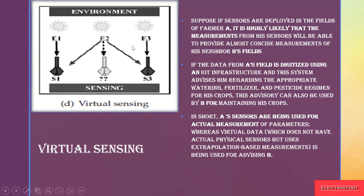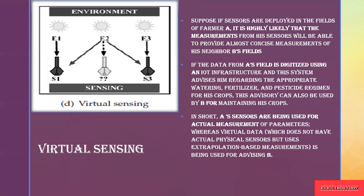Finally, there is virtual sensing. Here you can see pipettes with different values — imagine sensors in an agriculture field. Virtual sensors will provide correct measurements of each field. You have one field here, another field there, all processing different temperatures. Virtual sensing will precisely tell you what temperature each field is at. If the data from field A is digitized using IoT infrastructure, the appropriate watering, fertilizers, and pesticides required for field A can be determined.